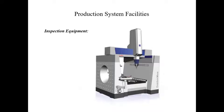We also have the inspection equipment, which come in various types — some manually operated, some semi-automated, and some fully automated. Their purpose is to check the quality of the parts, products, and components.